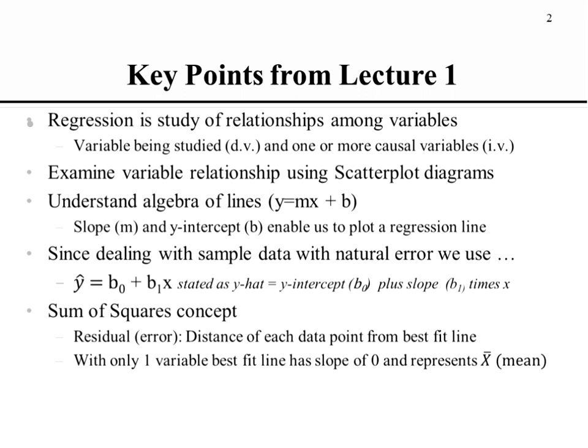The sum of squares concept was another very important thing we discussed. We were able to take the residual distance that each point was located away from the line, square those distances to eliminate negatives and accentuate larger values, and then sum them to get the total error associated with that line. In regression, we are always trying to build the best possible model — the more error in the sum of squares of error, the less useful the model might be.